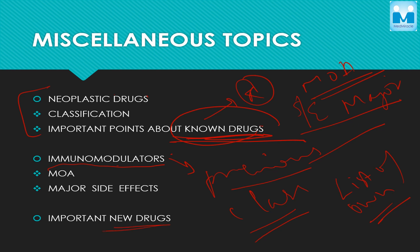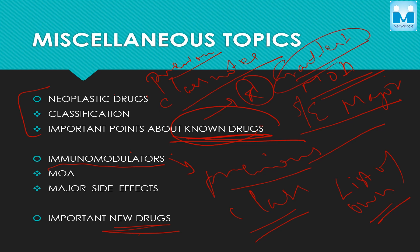For immunomodulators too, there are hundreds — you can never study them all. For neoplastic drugs, immunomodulators, and important new drugs — even in Govindrai, the last chapter lists around 100 new drugs which you can never fully study or memorize; you'll just get confused. So for these three categories, only read about the known drugs from previous year papers or class notes. When you attend grand tests and a new drug or immunomodulator appears, make a list, keep adding to it, and you'll eventually have the major drugs with their mechanism of action and major side effects to review before the exam.